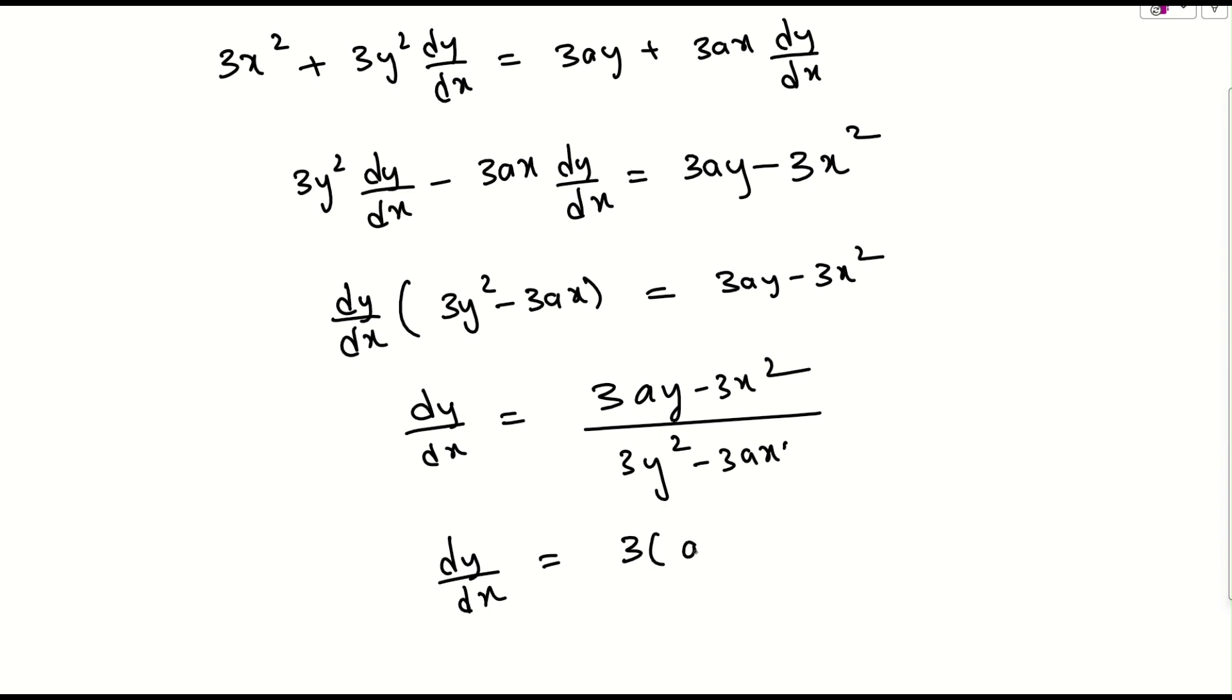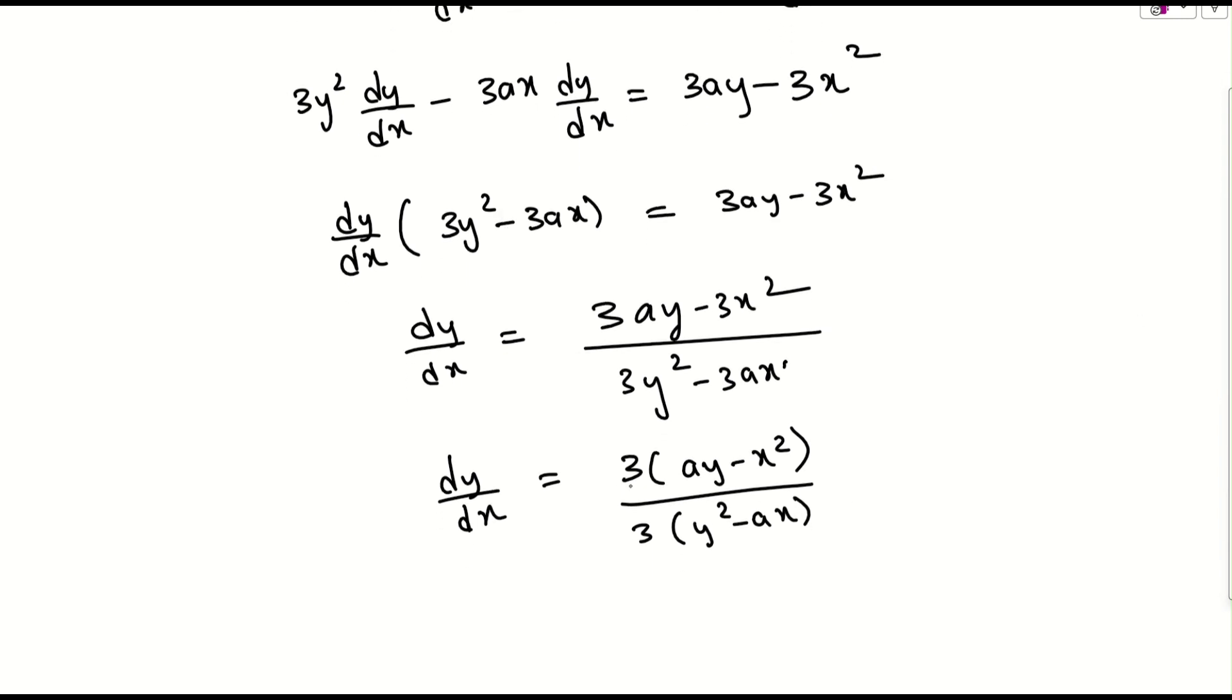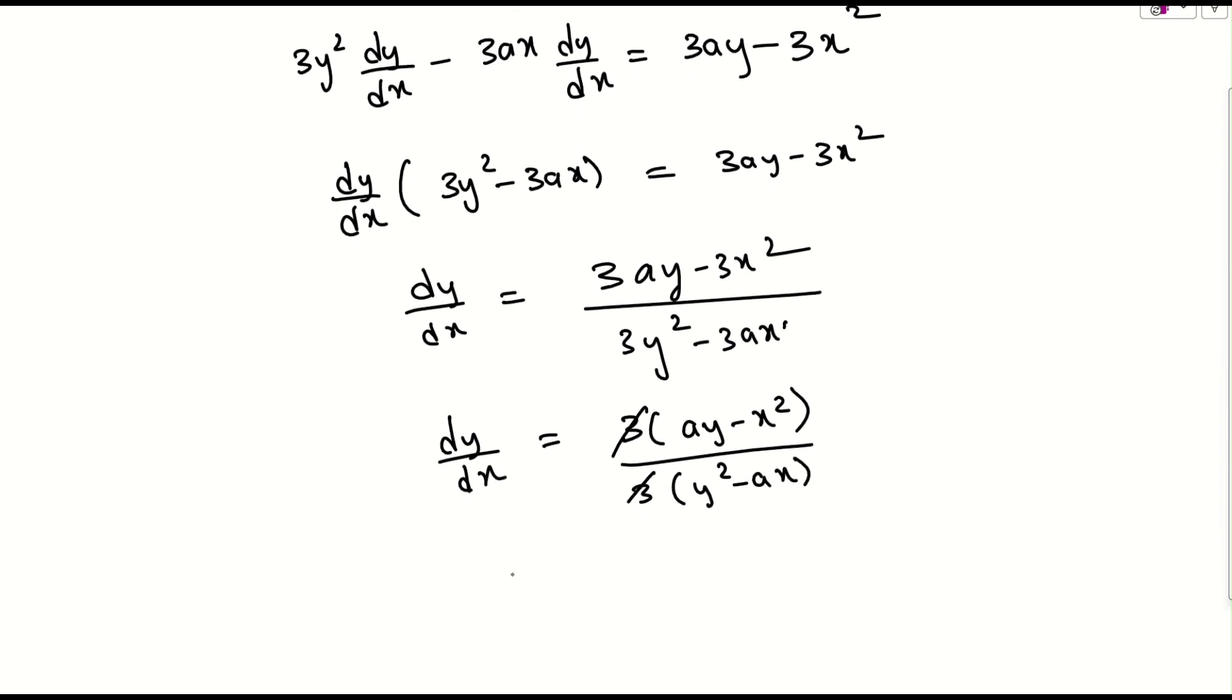From this what I will be getting: if I take 3 outside, this is nothing but $ay - x^2$, and if I take this 3 outside, this is $y^2 - ax$. So what we can do, we can easily cancel 3 and 3 here. So we will be getting $dy/dx$ which is nothing but $\frac{ay - x^2}{y^2 - ax}$.